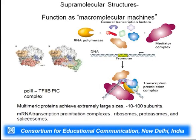Several proteins come together and form a large complex. The pre-initiation complex (PIC) and the transcription pre-initiation complex are shown here as examples. These are assemblies of several proteins forming an entire machinery to carry out regulation or DNA replication. These are multimeric protein assemblies having several subunits of different types found in very specific processes.